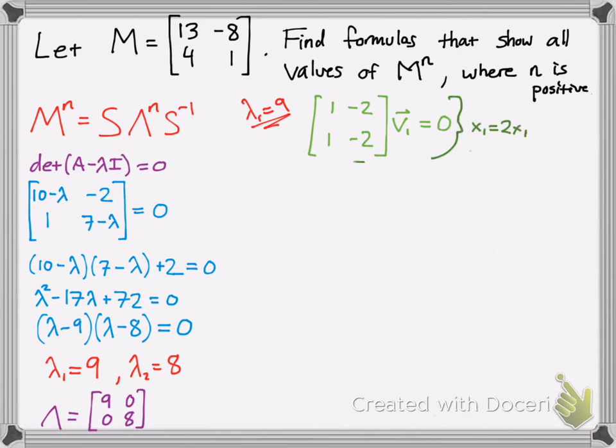Then you solve for your corresponding eigenvector. I solved it using algebra, but you could also row reduce. You should get x2 equals 1 half x1. Then you pick a special solution. I picked 2 for x1, and then x2 comes out as 1.